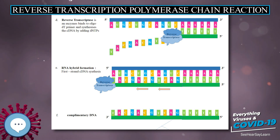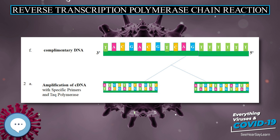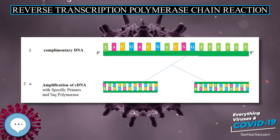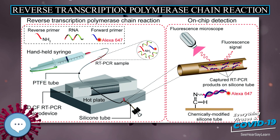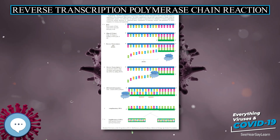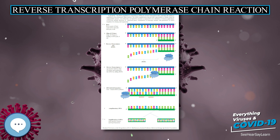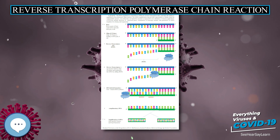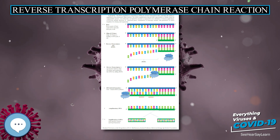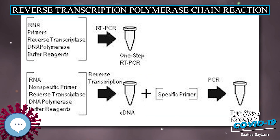Such use may be confusing, as RT-PCR can be used without qPCR — for example to enable molecular cloning, sequencing, or simple detection of RNA. Conversely, qPCR may be used without RT-PCR, for example to quantify the copy number of a specific piece of DNA.